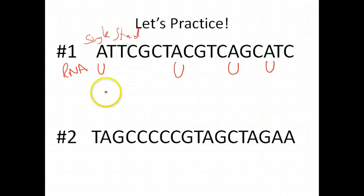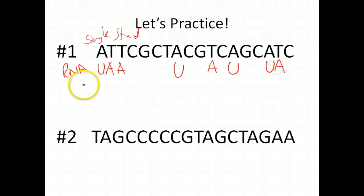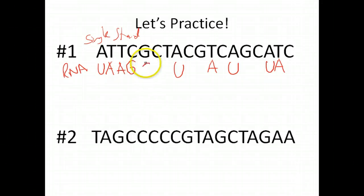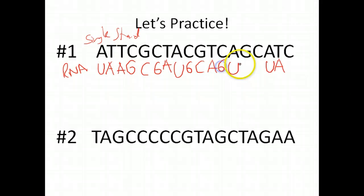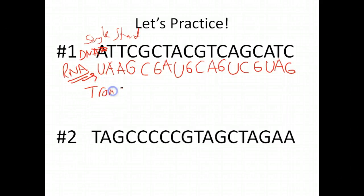Because there are no T's, everything else is essentially the same. There are still adenines in RNA, so you can still add A's. Wherever you see a C you add a G, wherever you see a G you add a C. We've taken this DNA strand and converted it to RNA through the process of transcription.